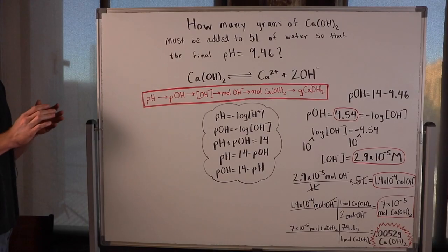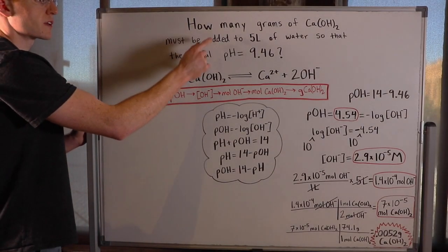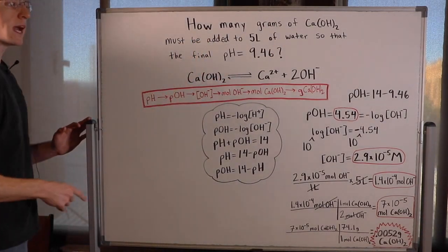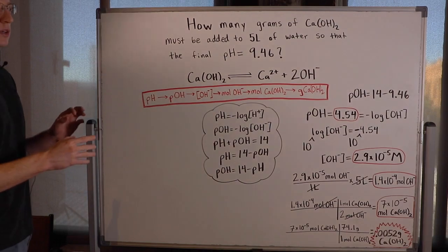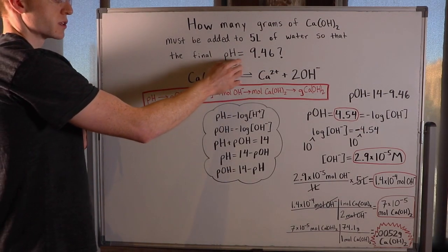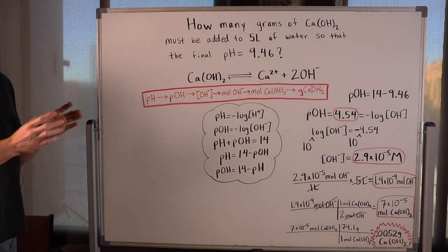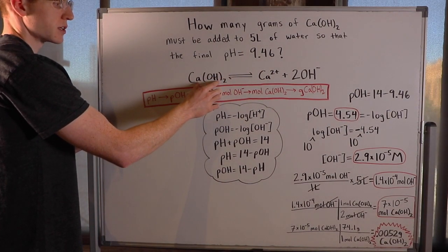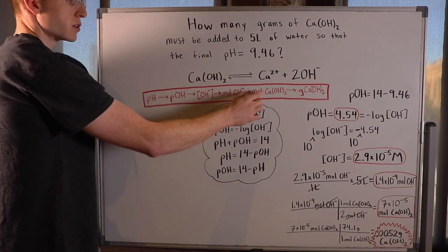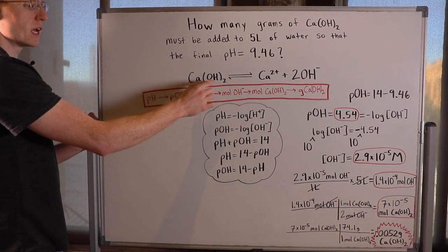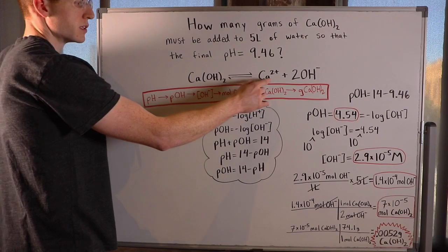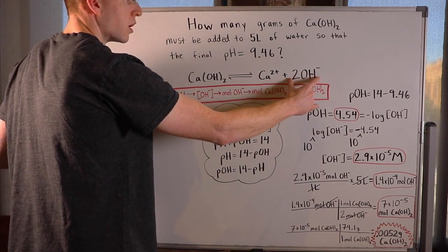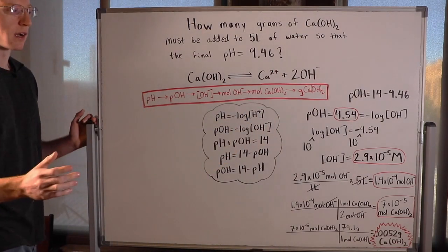This problem asks, how many grams of calcium hydroxide, Ca(OH)2, must be added to 5 liters of water so that the final pH of the solution equals 9.46? So the first thing I did here was I wrote out the general dissociation reaction of calcium hydroxide in a solution. It starts out as Ca(OH)2, and then it's going to dissociate into a calcium 2 plus ion and 2 OH minus, or hydroxide ions.